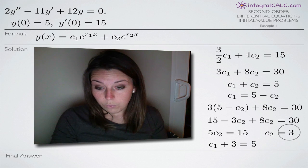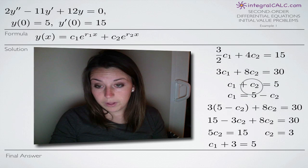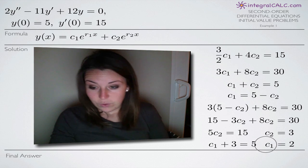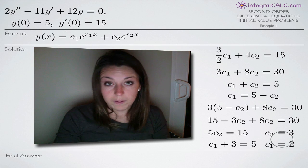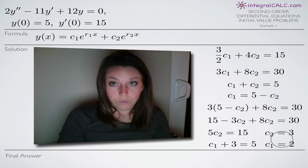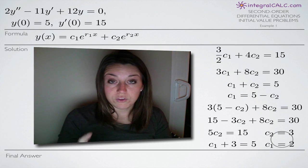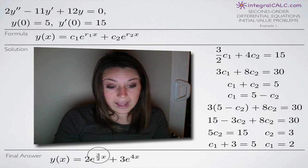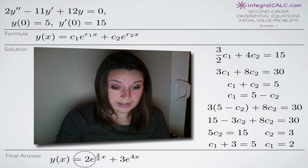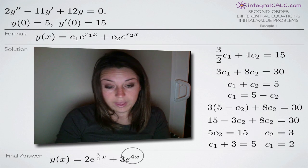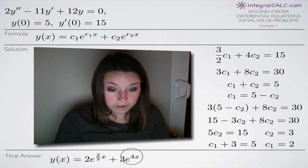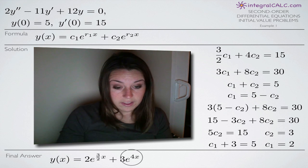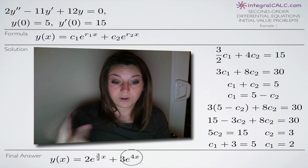Now that we've solved for c sub 2, we plug it back into the first equation: c sub 1 plus 3 equals 5, so c sub 1 equals 2. We then take our y(x) equation with r sub 1 equals 3/2 and r sub 2 equals 4 already filled in, and plug in c sub 1 equals 2 and c sub 2 equals 3 to get our final answer for y(x).